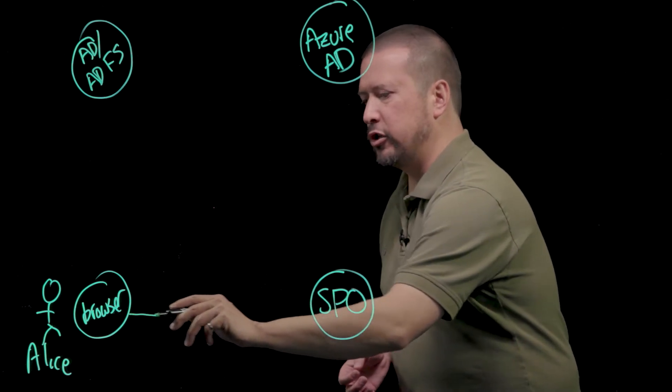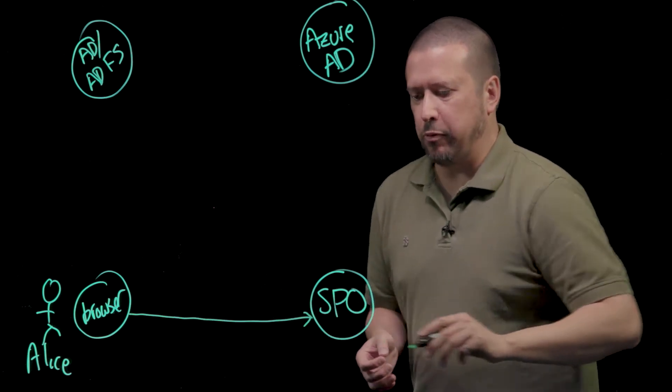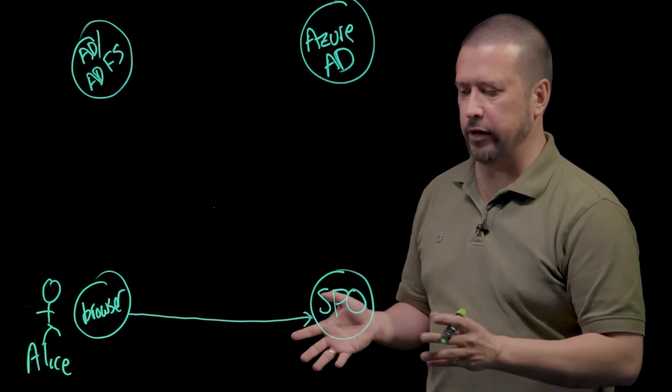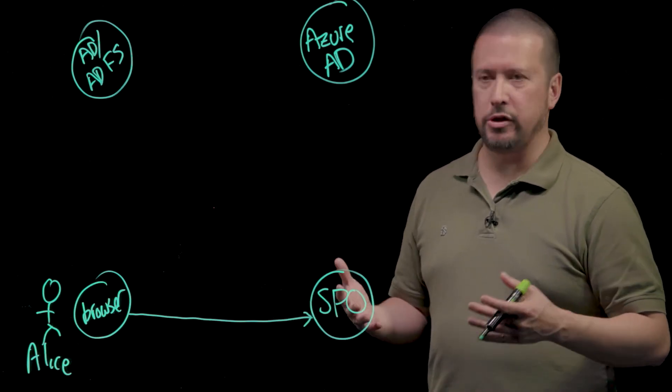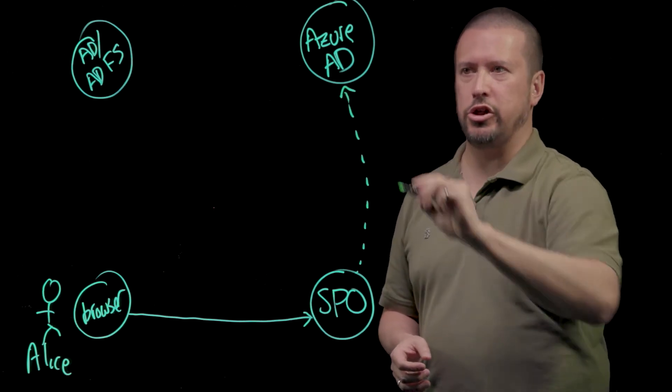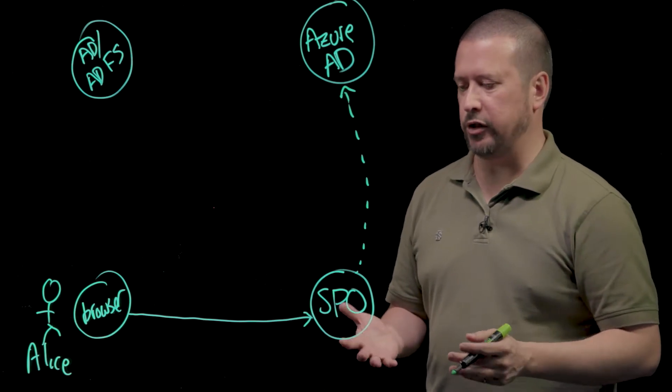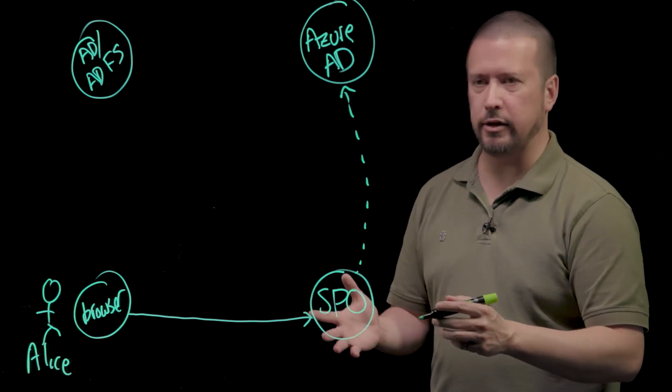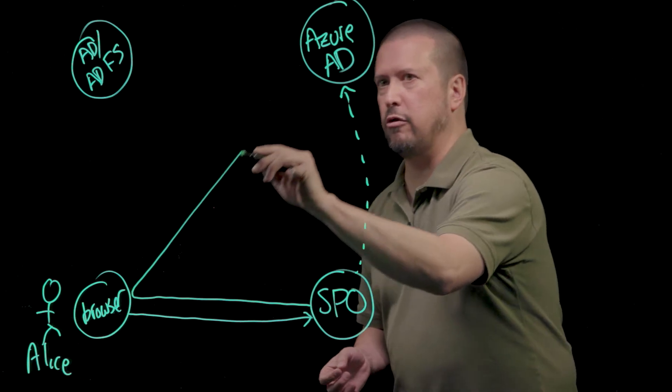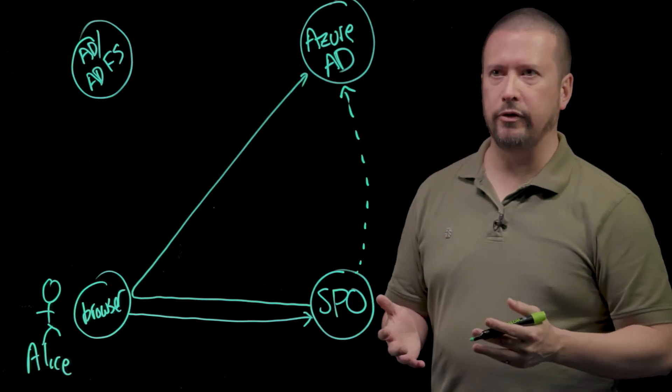As before, she navigates her browser to SharePoint Online, and let's assume there's no session set up, there's no cookie in her browser for SharePoint Online, she needs to authenticate. SharePoint Online has a trust relationship with Azure Active Directory. What it's going to do is use Alice's browser to send an authentication request through her browser to Azure Active Directory.